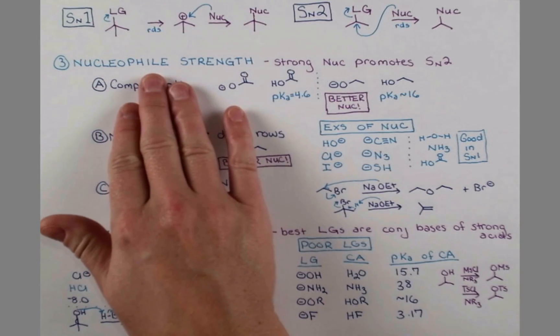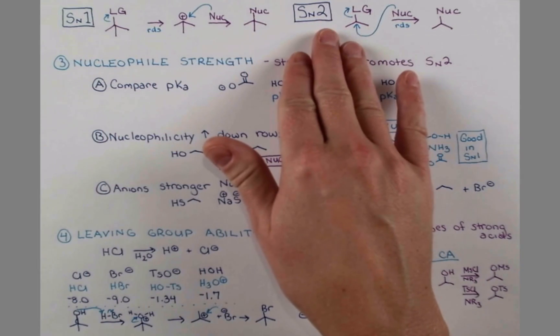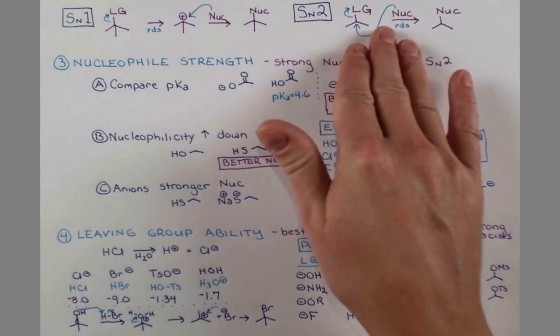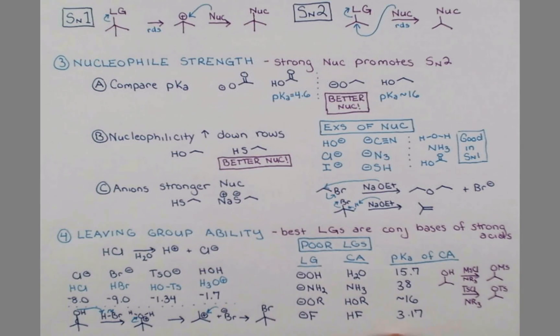All right, so we went over some methods to determine nucleophile strength. Strong nucleophiles will promote SN2 reactions. We looked at good leaving groups for both SN1 and SN2 reactions, and examined some poor leaving groups, and learned how to convert alcohols into better leaving groups. As ever, I hope you learned something from this video. If you did, please like and subscribe to my channel. We'll see you next time. Bye.